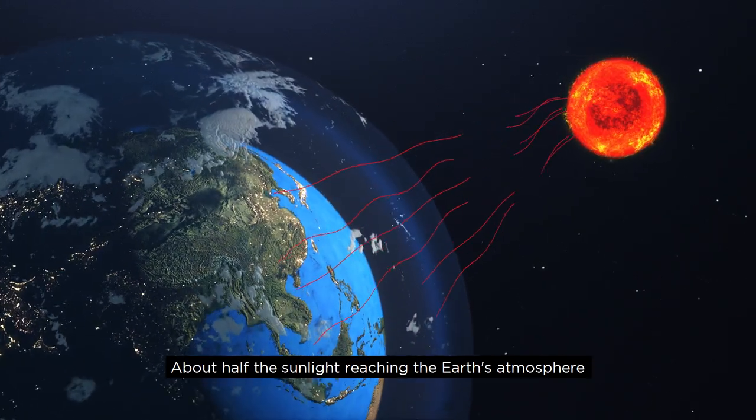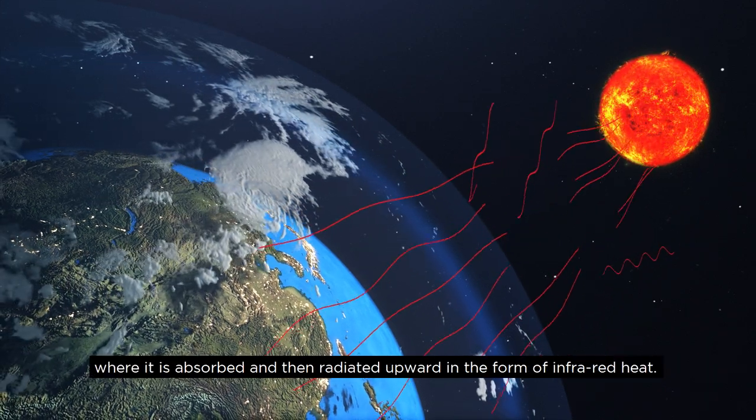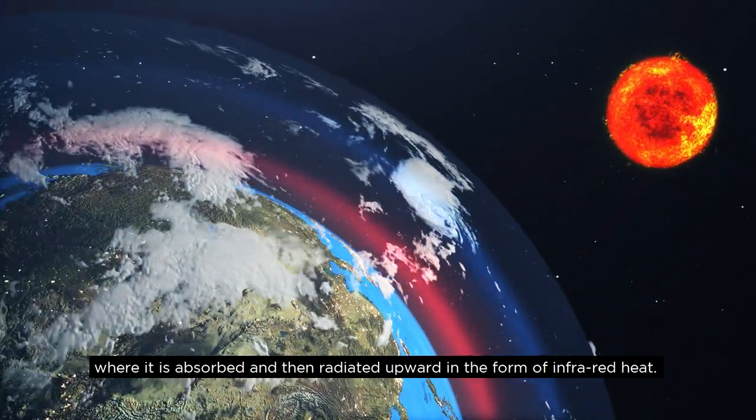About half of the sunlight reaching the Earth's atmosphere passes through air and clouds to the surface, where it is absorbed and then radiated upward in the form of infrared heat.